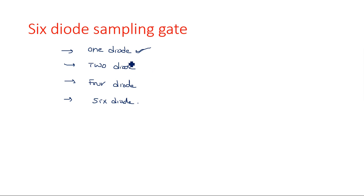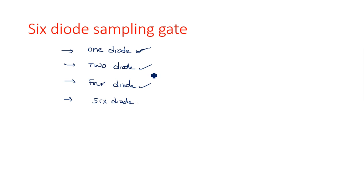The two diode sampling gate is used to transmit both positive peak as well as negative peak. One diode is connected in forward biased condition and another in reverse biased condition. For the four diode sampling gate, two diodes work for the positive peak and two more diodes work for the negative peak, with only two diodes in the on state at a time.